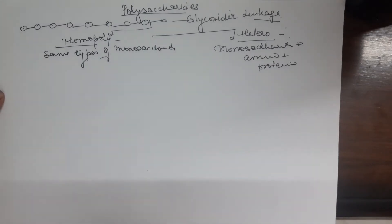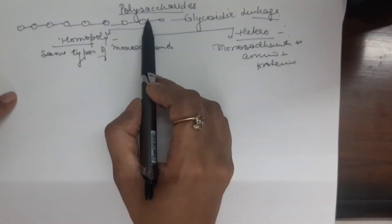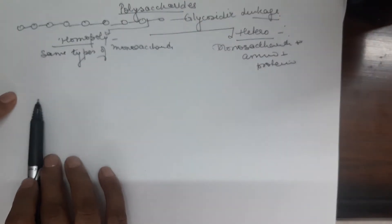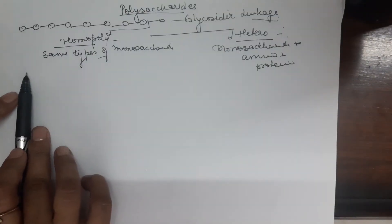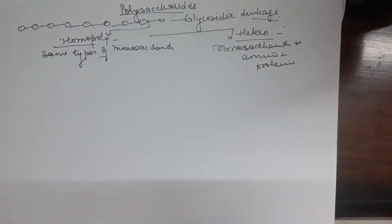Polysaccharides are formed by condensation of many monomers. The number of these monomers may be in thousands. Polysaccharides may be categorized as homopolysaccharide or heteropolysaccharide. As the name indicates, same type of monosaccharide condenses to form a homopolysaccharide. On the other hand, there may be certain amino groups or protein groups in heteropolysaccharide.